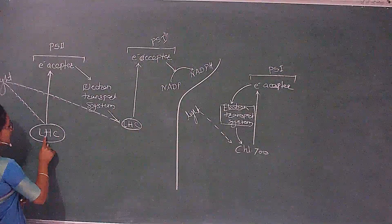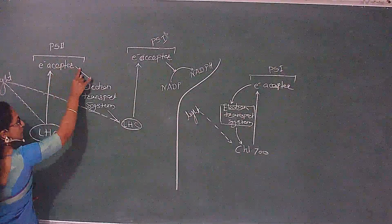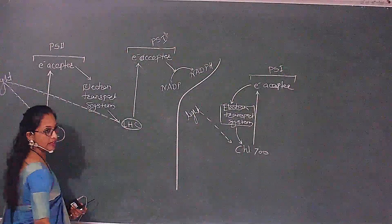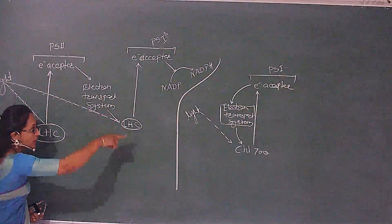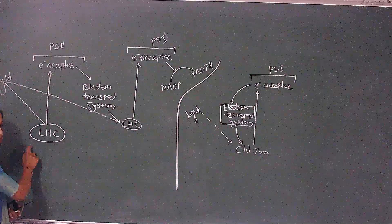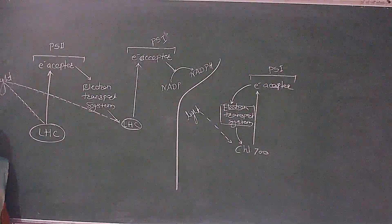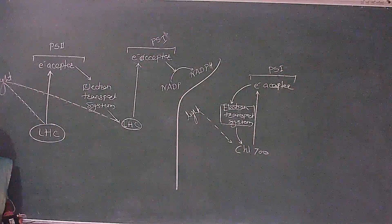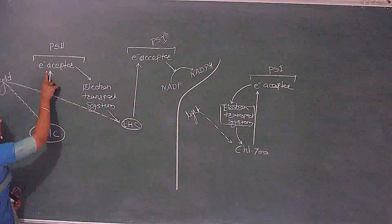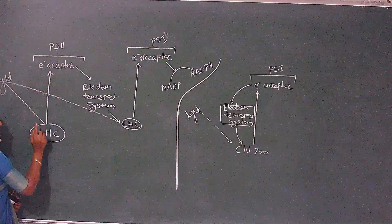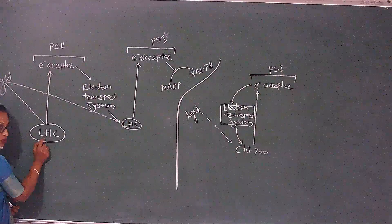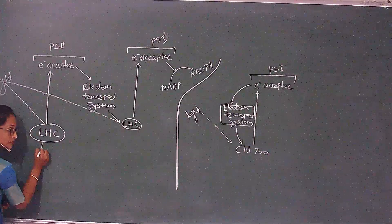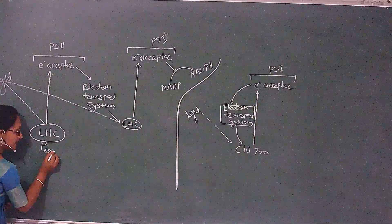In non-cyclic photophosphorylation, electrons are emitted from here; through this chain the NADP did not accept them; these electrons did not come back to the first LHC — hence it is called non-cyclic photophosphorylation. Yesterday we saw that the first chlorophyll A has a wavelength of 680.